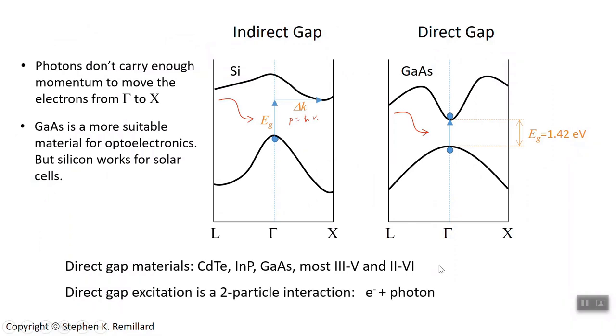Something I would say about direct gap excitation is that it's a two-particle interaction. There are always two particles at play. That is the electron and the photon. So the photon comes and strikes an electron in the valence band, and it goes into the conduction band. Energy was conserved and momentum was conserved in that collision between the electron and the photon.